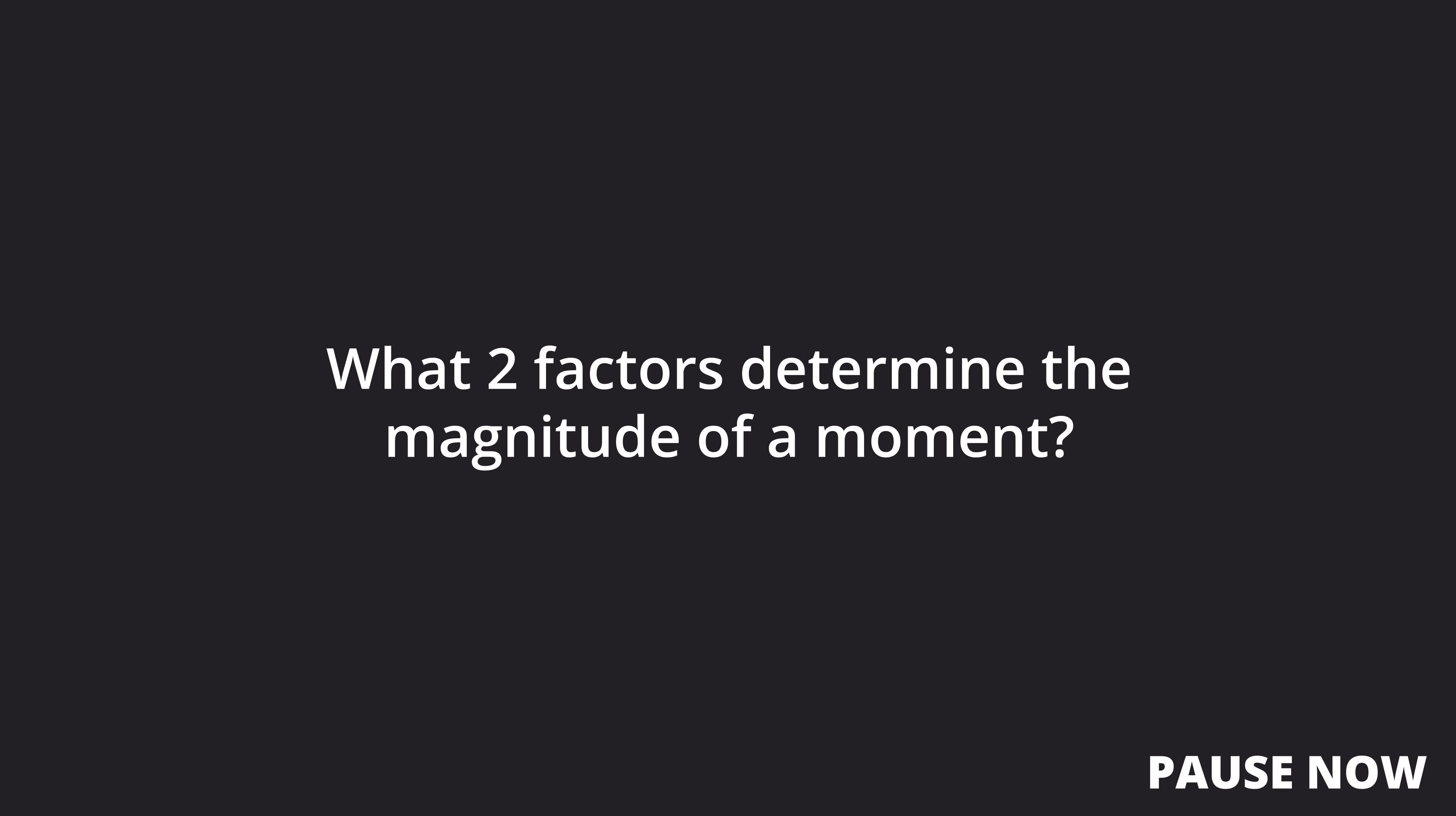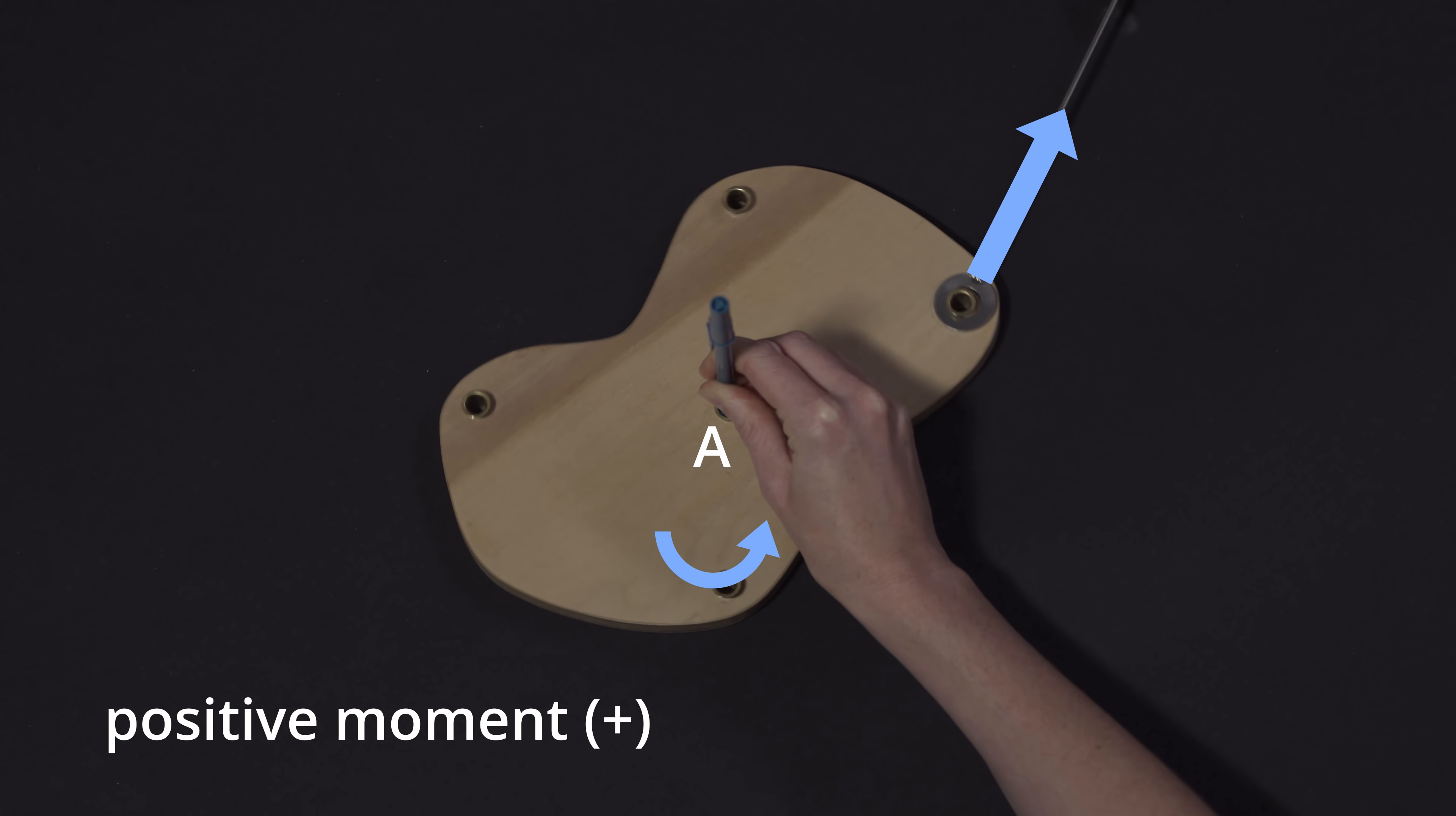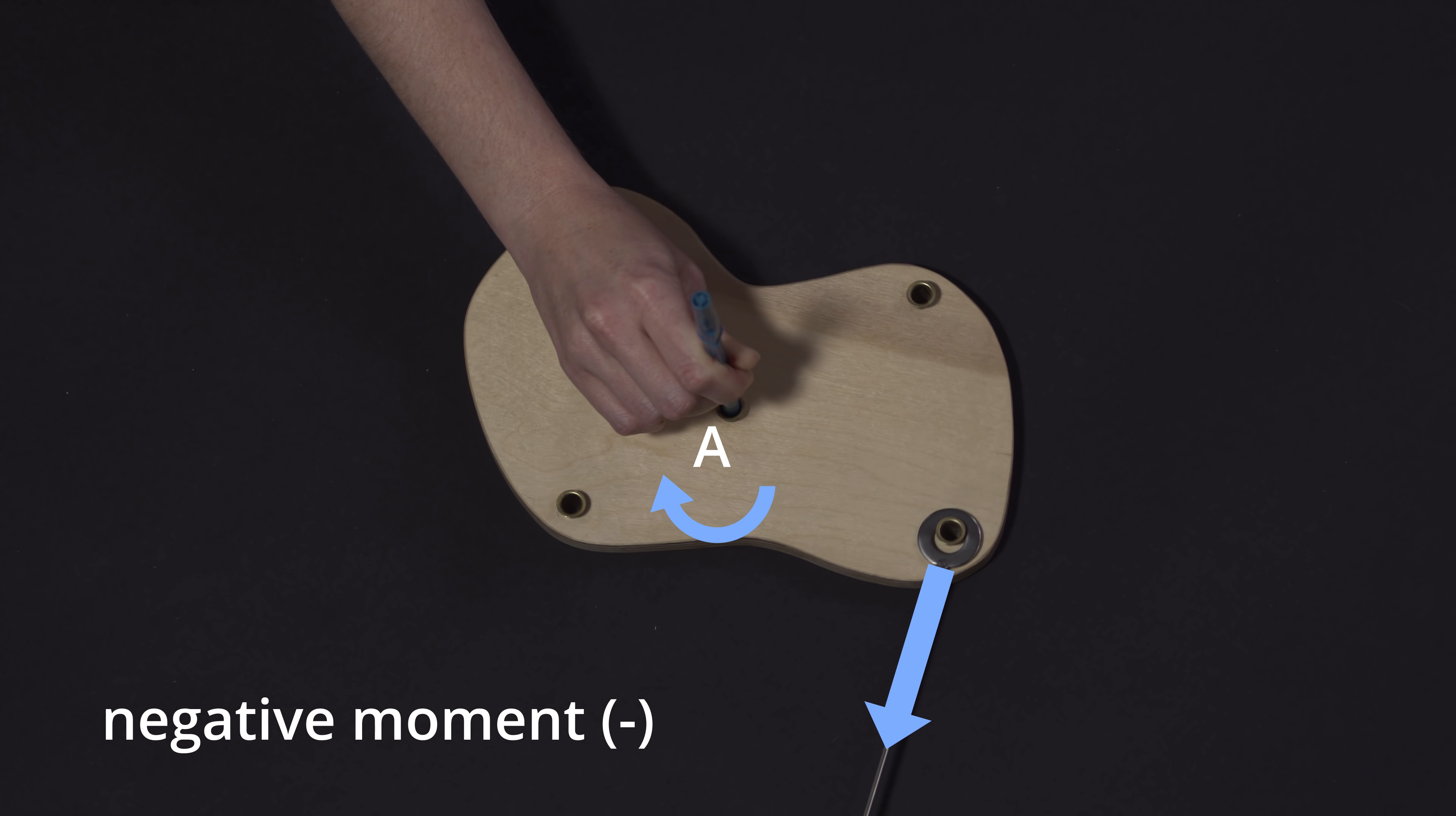Now, can you state what two factors determine the magnitude of a moment? The answer is force and distance. More specifically, we multiply force and distance together. The distance we use is the perpendicular distance from the line of action of the force to the point A. This is the same as the shortest distance between point A and the line of action of the force. By convention, we call moments that are counterclockwise positive and clockwise moments negative.